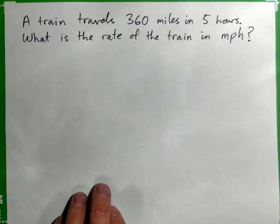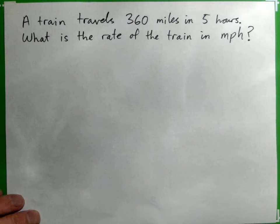So, we have a train here that travels 360 miles in 5 hours. What is the rate of the train in miles per hour?